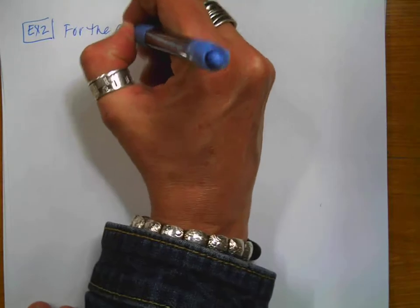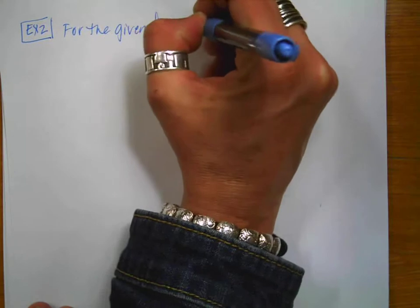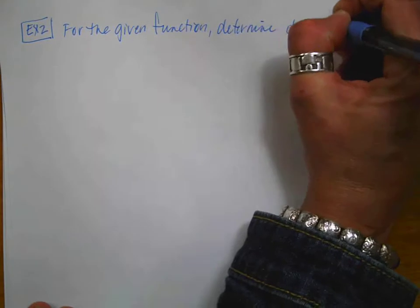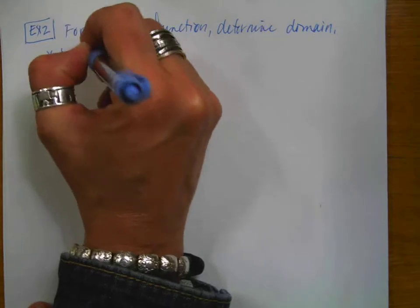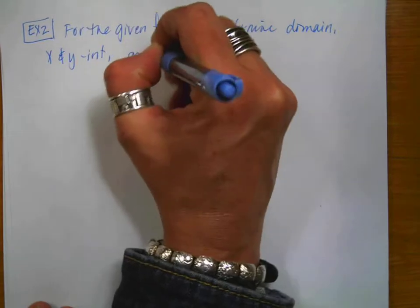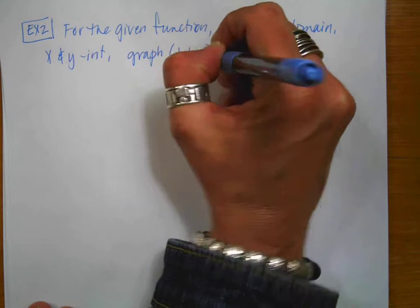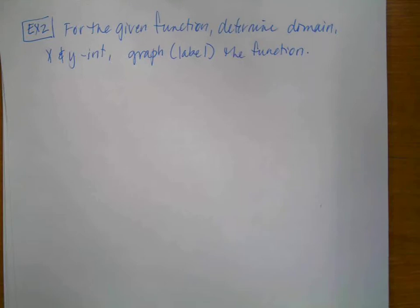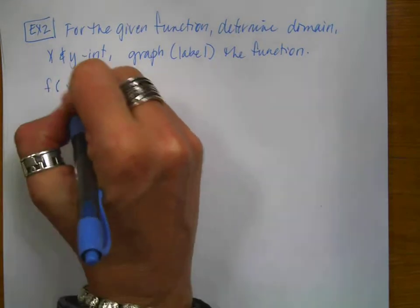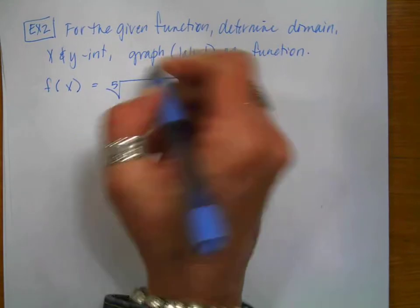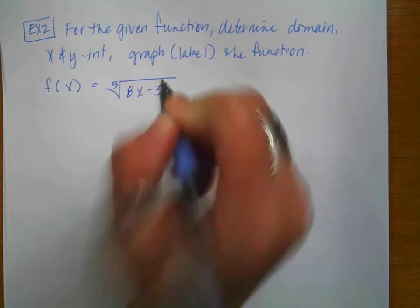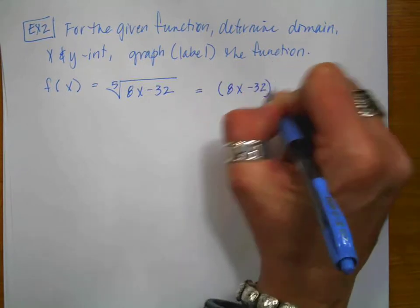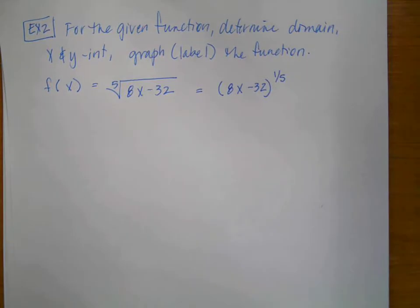So for example number two, it says, for the given function determine the domain, the x and y intercepts, and then graph. And remember, anytime you're told to graph, that means that you also have to label the function. Because a graph without labels is just a pretty picture. Our function is going to be the fifth root of 8x minus 32. And so before I put this in my calculator, I'm going to rewrite it as (8x - 32) raised to the 1/5.